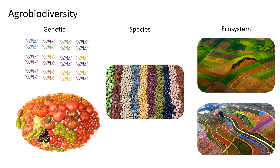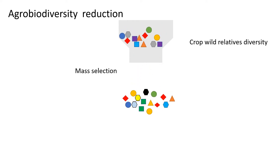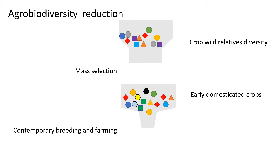All three levels of agrobiodiversity have undergone significant reductions since the development of modern breeding techniques and farming. Genetic, or intraspecies and intravariety, diversity has decreased ever since the first events of plant domestication as a consequence of mass selection, since the goal of mass selection is to eliminate undesired genotypes and multiply the desired ones. Such selective pressure reduced the genetic diversity of early domesticated crops compared to their wild relatives. With the arrival of contemporary plant breeding and farming techniques, the reduction of genetic diversity was even more intensified, as modern farming favours the cultivation and improvement of only a few select pure breeding lines with no genetic diversity within the line.